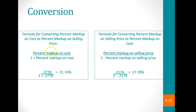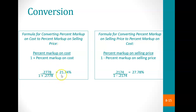This shows how to convert the percent markup on cost to the percent markup on selling price. If you know the percent markup on cost, divide it by 1 plus the percent markup on cost. From our previous example, the markup on cost was 27.78%, which converts to a percent markup on selling price of 21.74%. Conversely, the percent markup on selling price divided by 1 minus the percent markup on selling price gives the percent markup on cost.